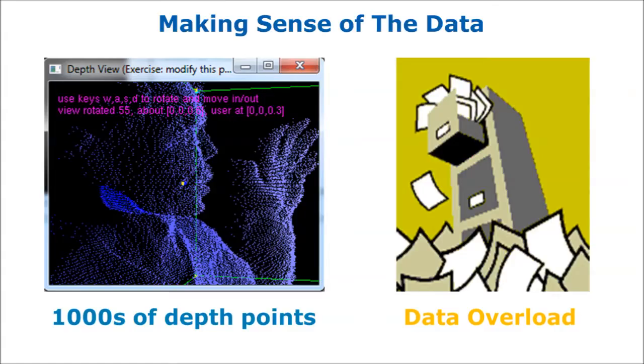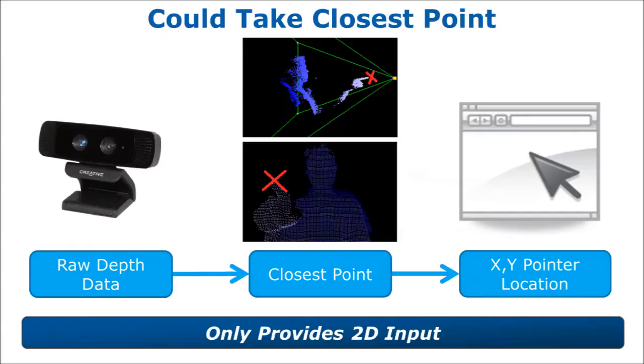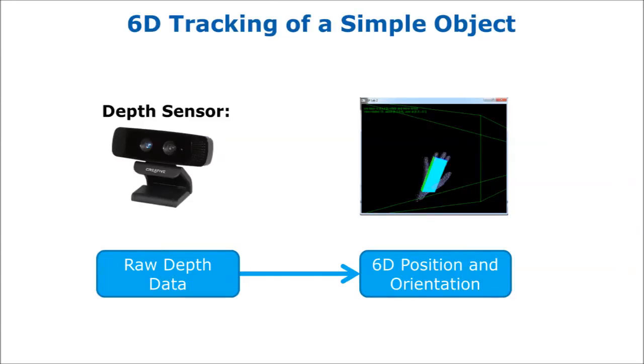Thousands of depth samples is a whole lot of data for a programmer to digest. An application needs to turn this into some meaningful information in order to do something useful with it. Well, in the past, how have we dealt with input devices such as the mouse? Well, there the operating system takes the raw signals and translates them into a simple xy pointer location on the screen. Okay, using the depth data, we could grab the closest pixel and use that as the xy for the pointer. Sure, but it would be nice to capture more than just yet another 2D input stream. One of the useful things we can do is 6D tracking of a simple object or open hand, which will give us a 3D position and orientation to work with.